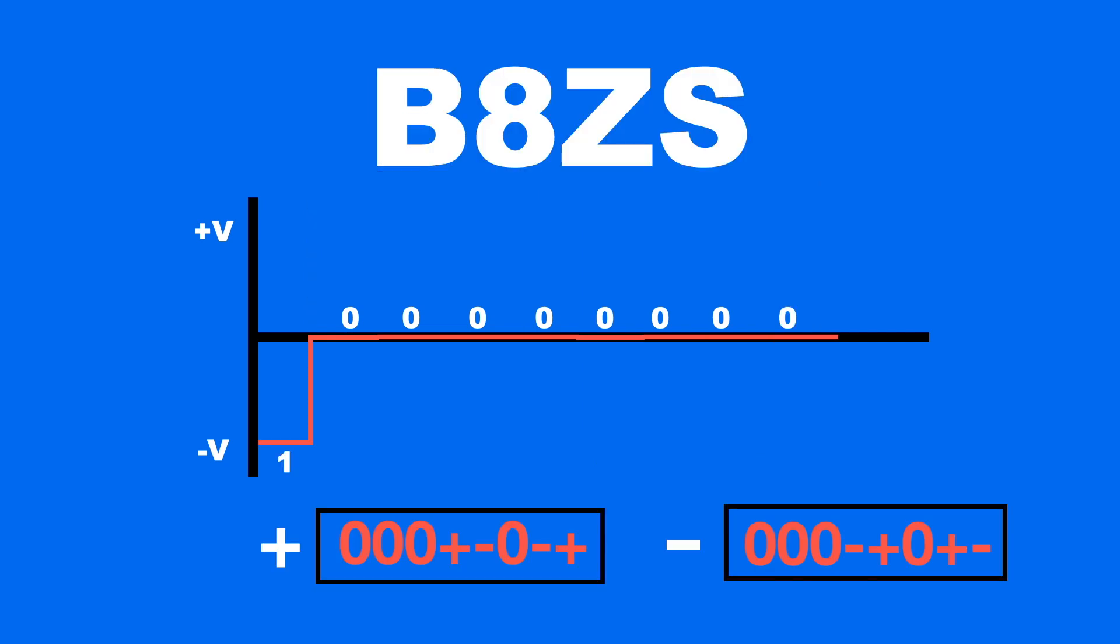And if the 8 zeros are preceded by a one bit with negative polarity, B8ZS replaces the zeros with this pattern.